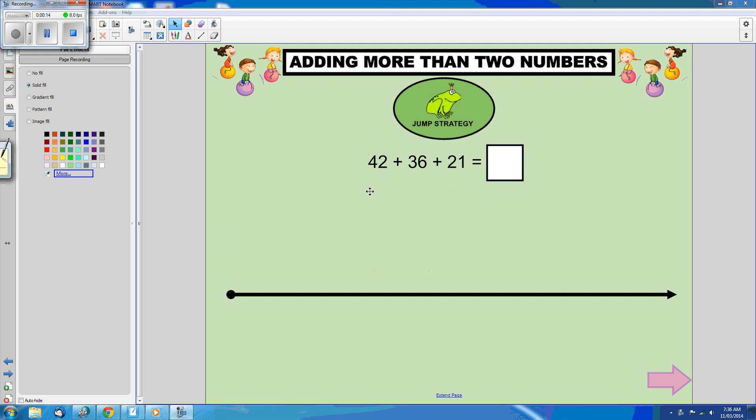So we'll start with the biggest number, which is 42, and we'll put it at the end of our number line.